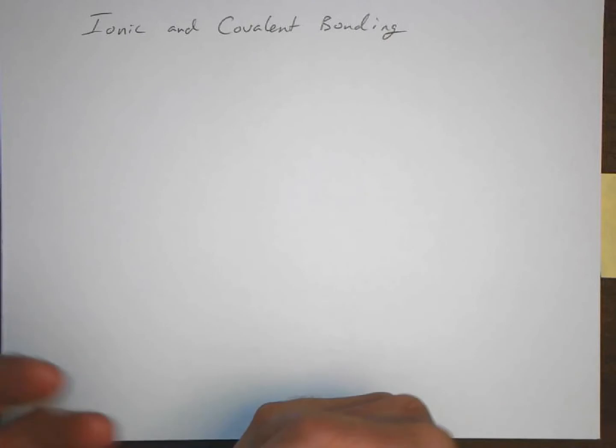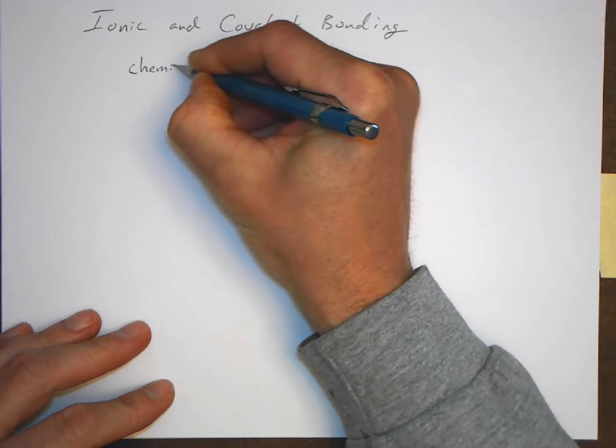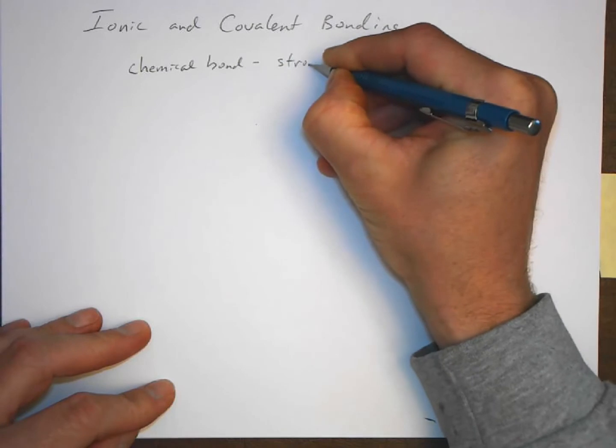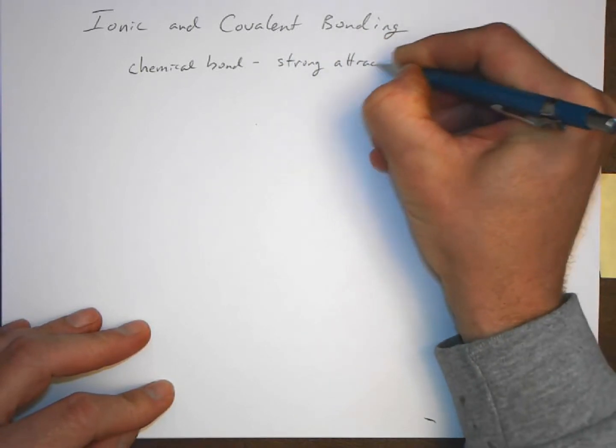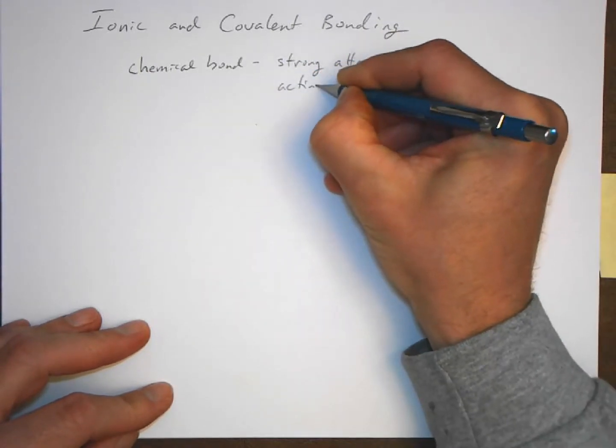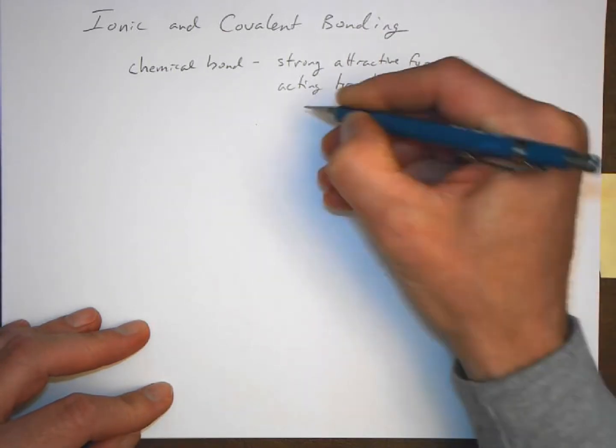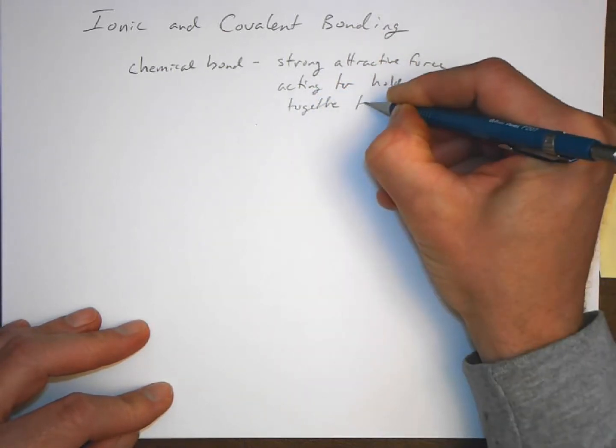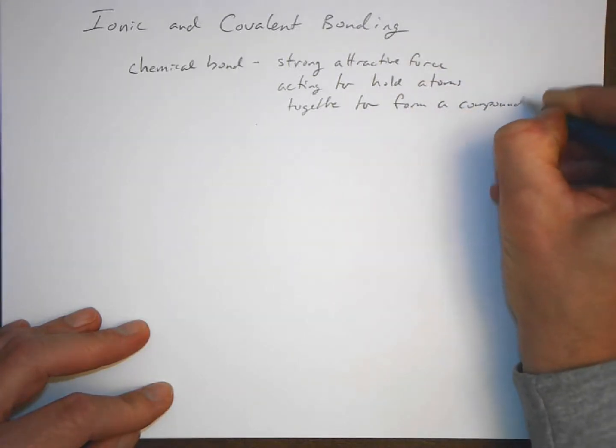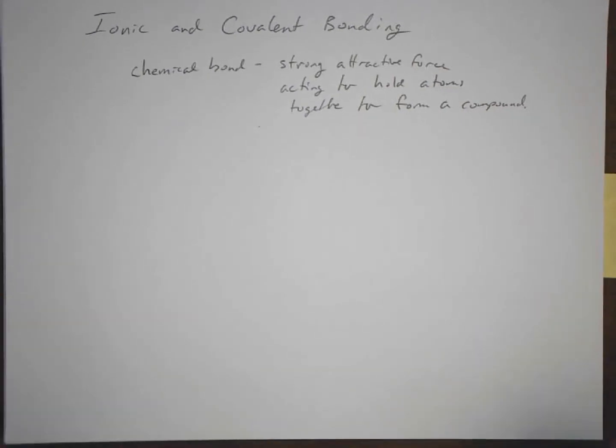In this chapter, we're going to start to look at what exactly a chemical bond is and how it works. A chemical bond is a strong attractive force acting to hold atoms together to form a compound. It's the means by which nature holds atoms together to make chemical compounds.